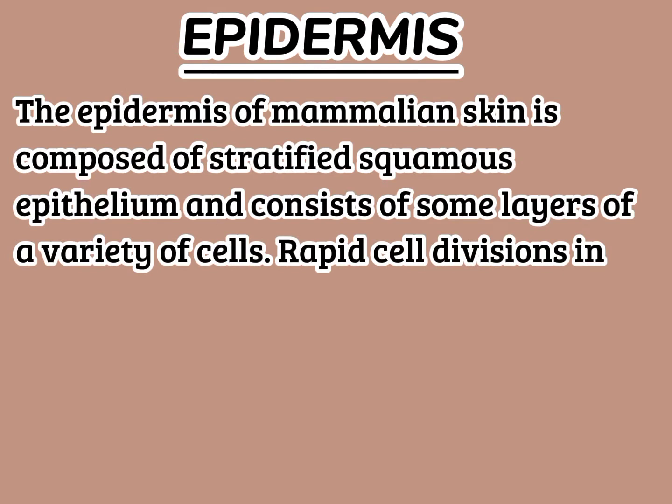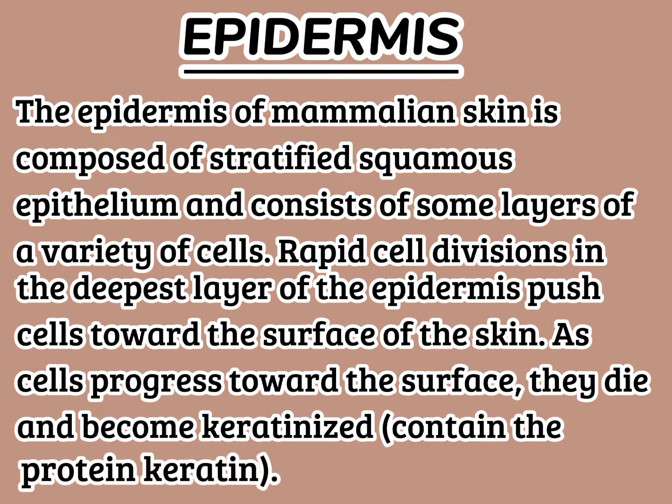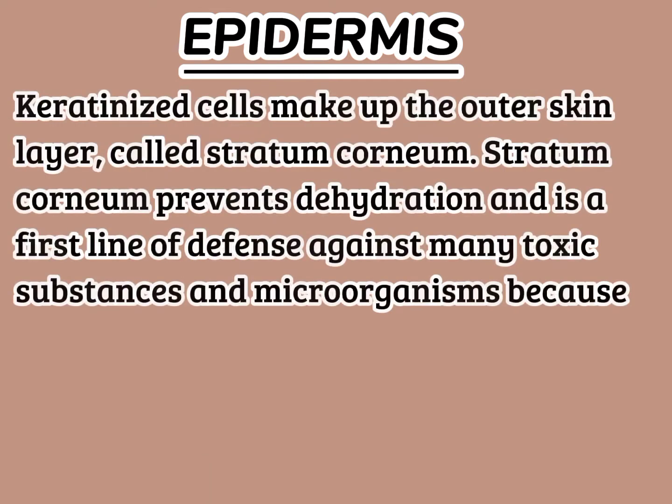The epidermis of mammalian skin is composed of stratified squamous epithelium and consists of several layers of a variety of cells. Rapid cell divisions in the deepest layer of the epidermis push cells toward the surface of the skin. As cells progress toward the surface, they die and become keratinized. Keratinized cells make up the outer skin layer called the stratum corneum.